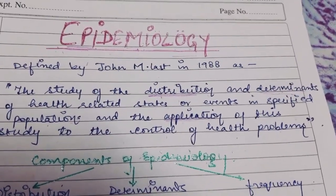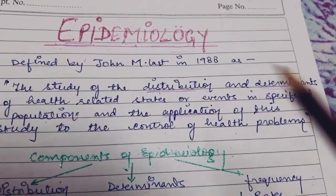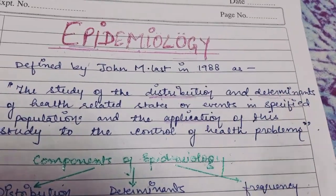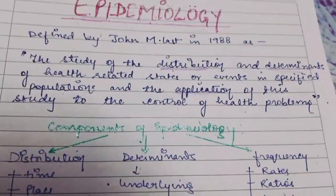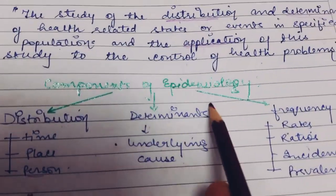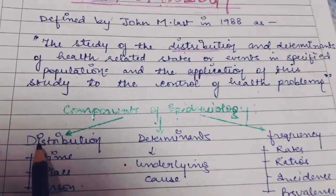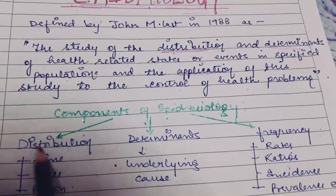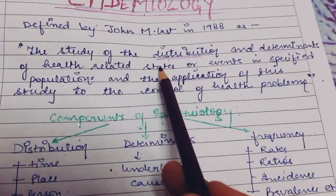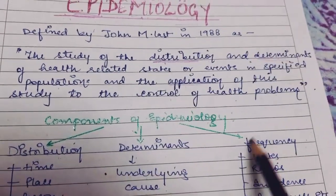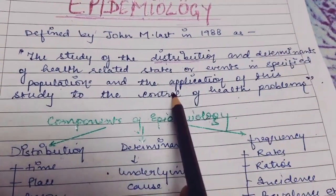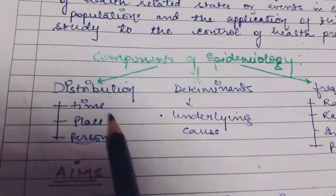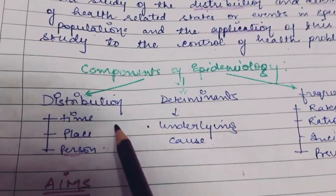There are three words you have to remember: distribution, determinants, and application. Now there are three components of epidemiology — distribution, determinants, and frequency. Distribution and determinants are there in the definition itself, but frequency is not included in the definition.